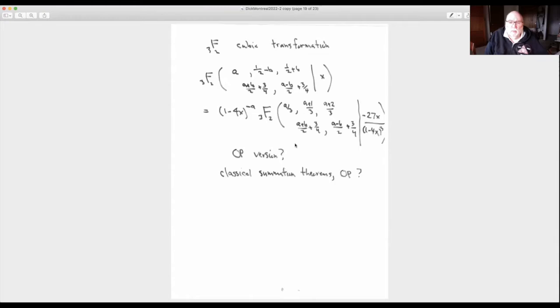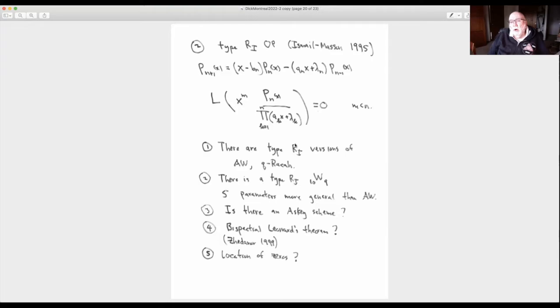Remark number two, these are type R1 orthogonal polynomials that were considered by Mourad and David Basson in 1995. This is the three-term recurrence. The only difference is this extra x right here. If A_n is zero, you'd have this normal orthogonal polynomial, this orthogonality. L of x to the m times P_n divided by x, which comes from this last term here, is zero. In other words, the vector space on which this L acts is bigger than polynomials and includes some rational functions. Notice if A equals zero, this would go back to polynomial orthogonality.